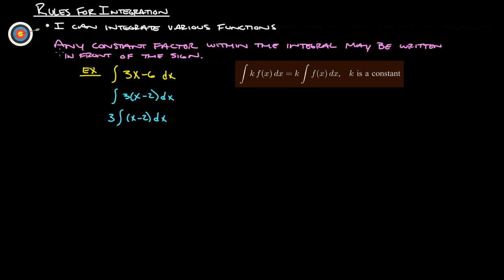To take a look at some important rules we have here: any constant factor within the integral may be written in front of the sign. For example, we've got this integral of 3x minus 6 with respect to x. We can factor a 3 out of both of those, so you factor the 3 out and it can come out in front of the integral — you just integrate this part and then multiply your result by 3. This is just the formula for that, showing if you've got a common factor, a constant k out here, you can just move it out in front.